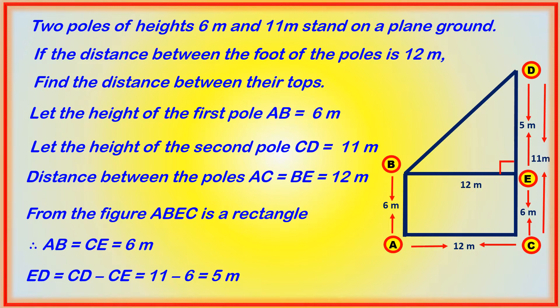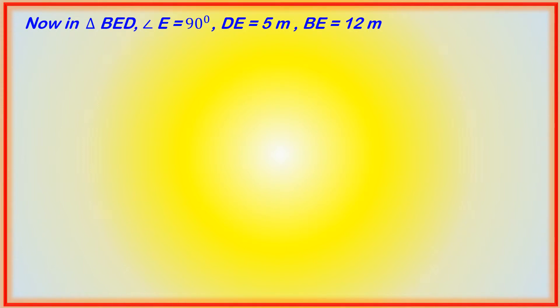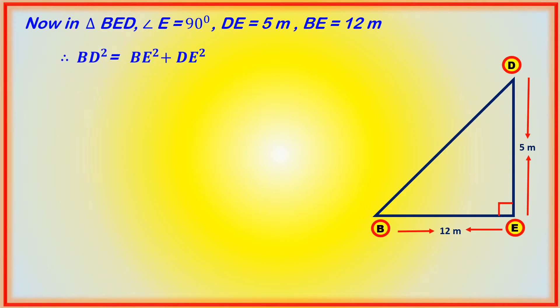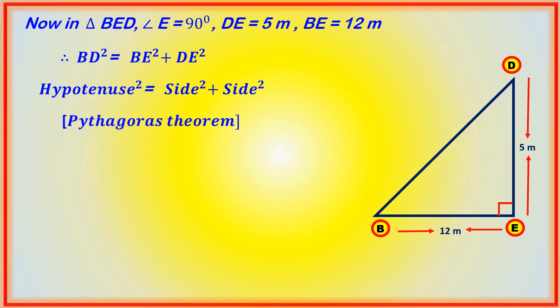For that, we consider only right angle triangle BED. In triangle BED, angle E is equal to 90 degrees, DE is equal to 5 meters, and BE is equal to 12 meters. By the Pythagorean theorem, BD square is equal to BE square plus DE square — that is, hypotenuse squared equals the sum of the squares of the other two sides. So BD square is equal to 12 square plus 5 square.